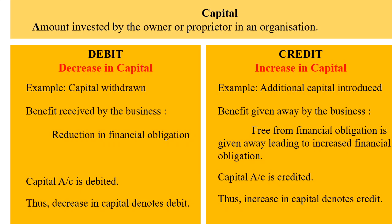Capital: the amount invested by the owner or proprietor in an organization is known as capital. Debit denotes decrease in capital. Example: capital withdrawn. The benefit received by the business is reduction in financial obligation, and so the capital account is debited. Thus, decrease in capital denotes debit.